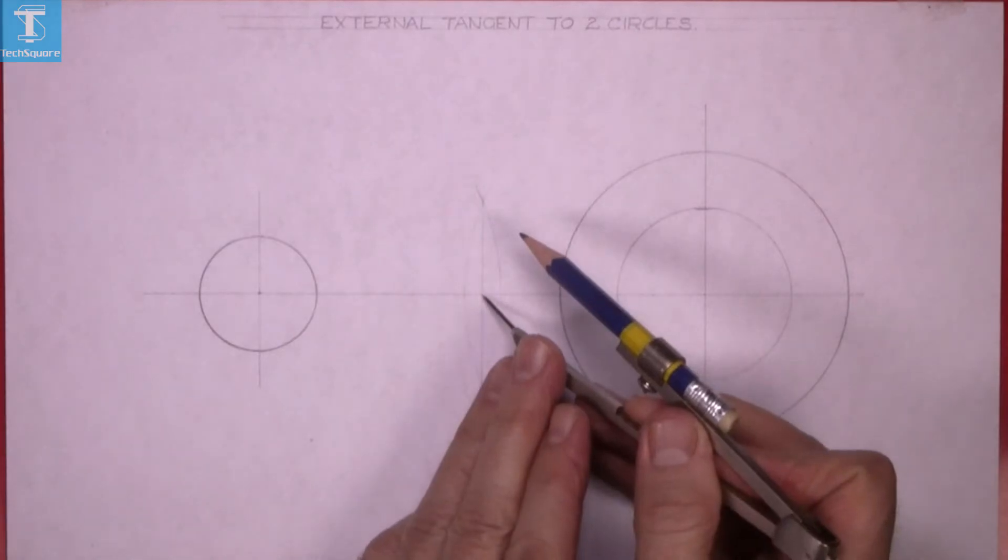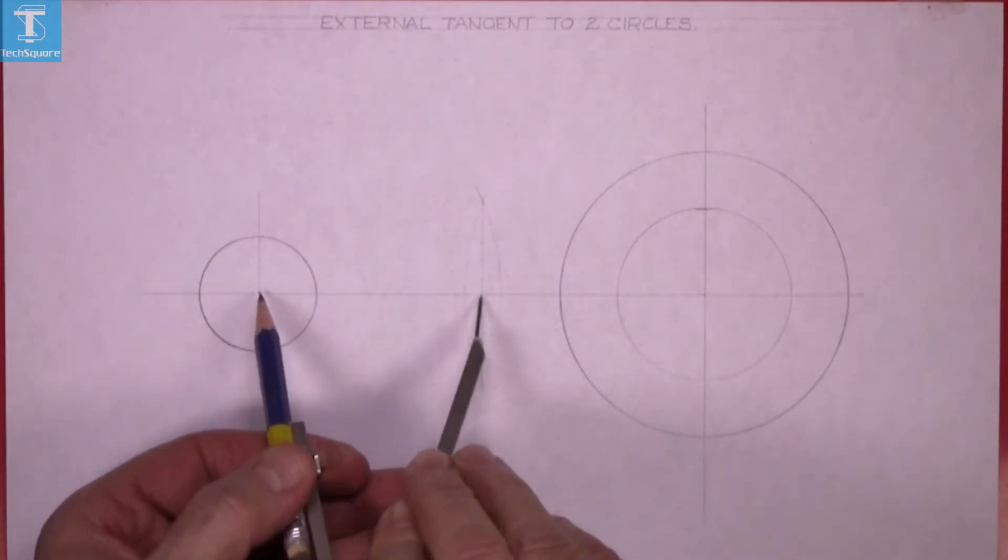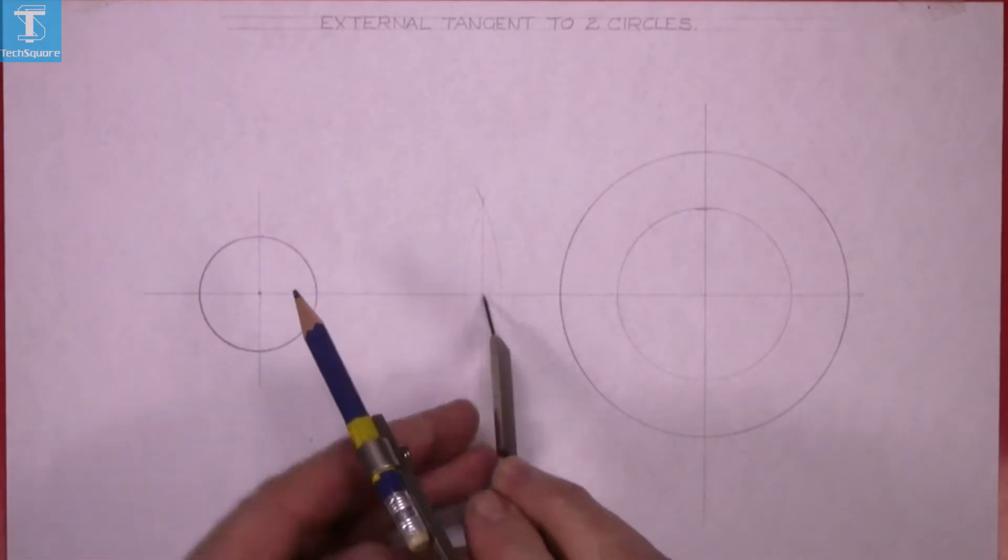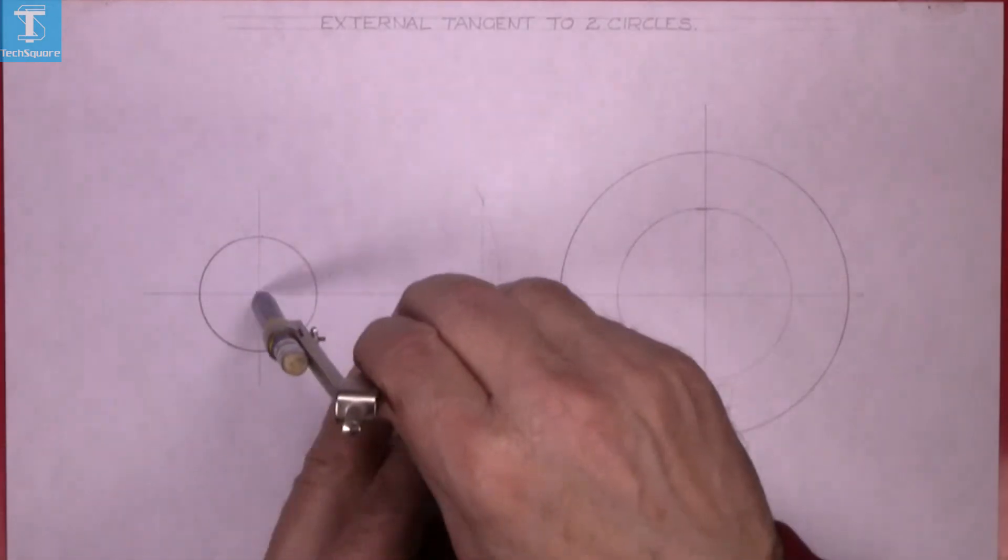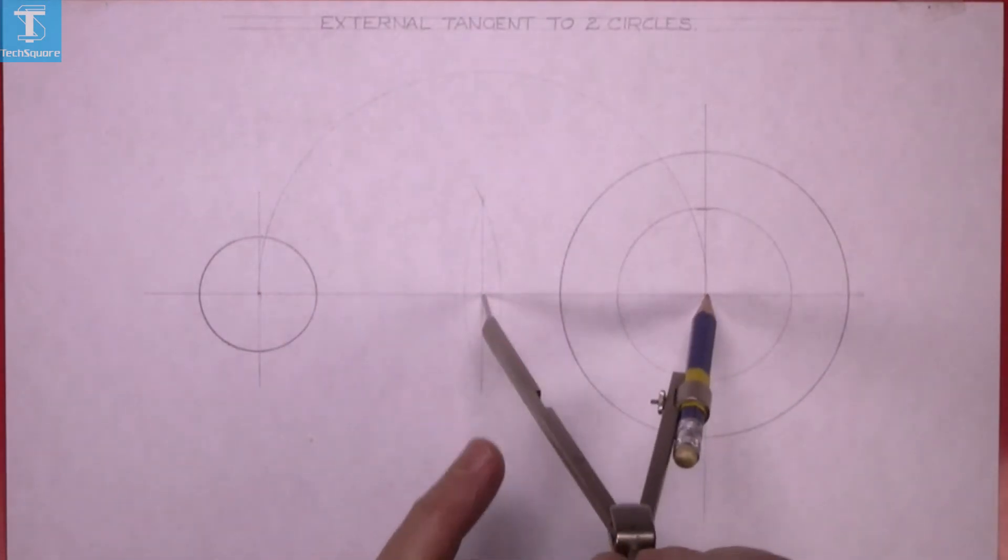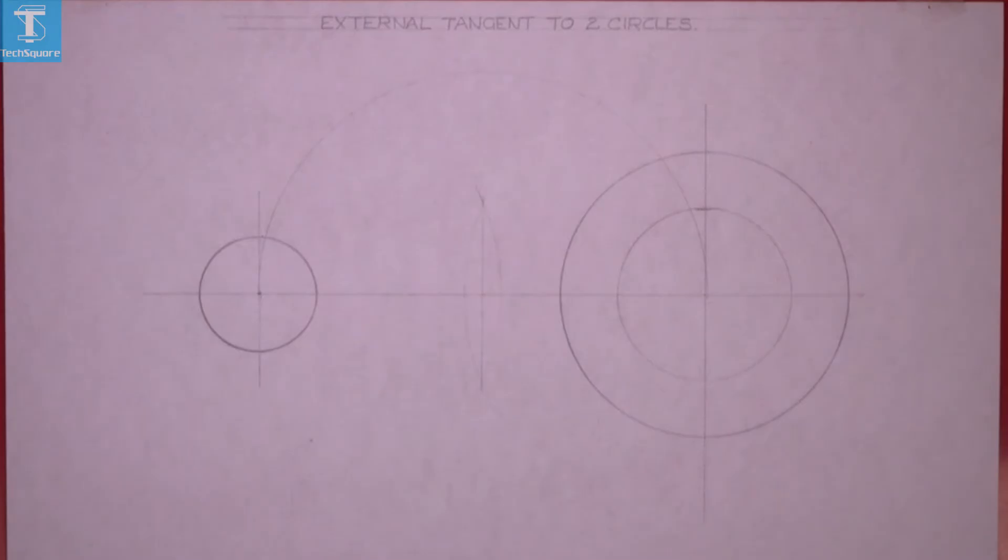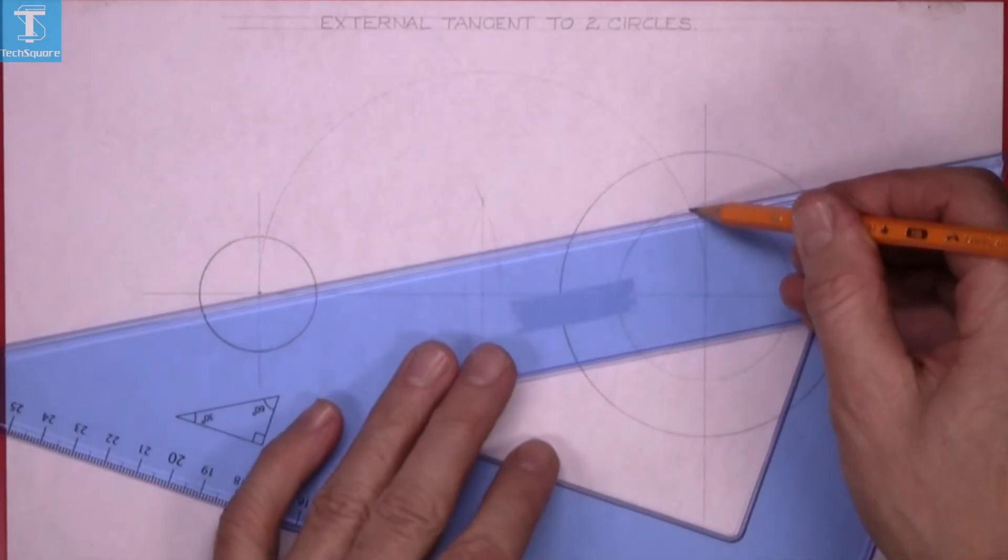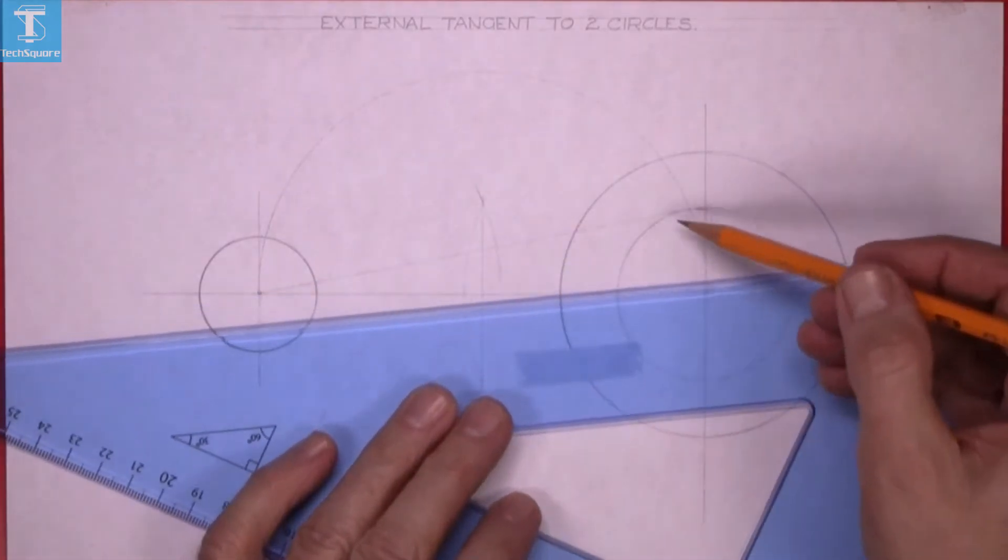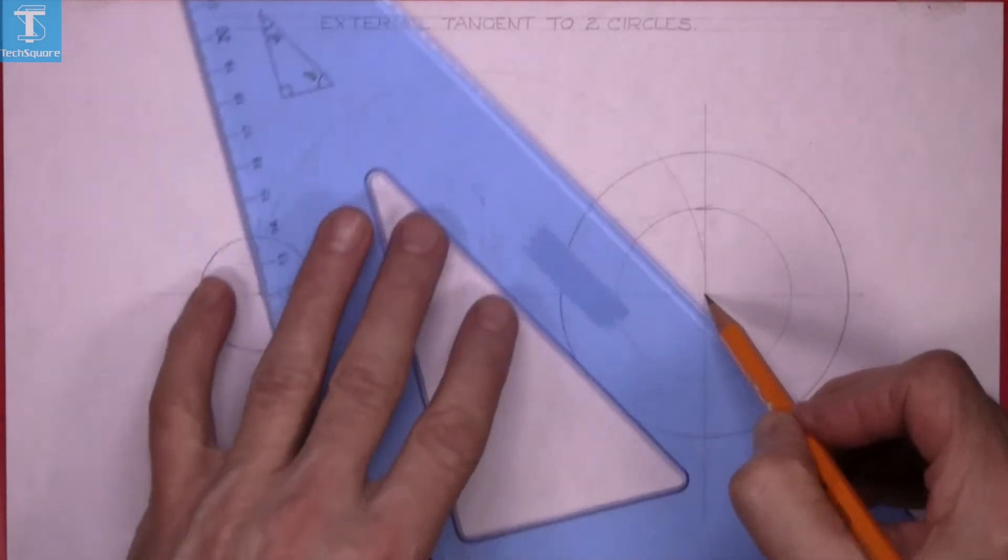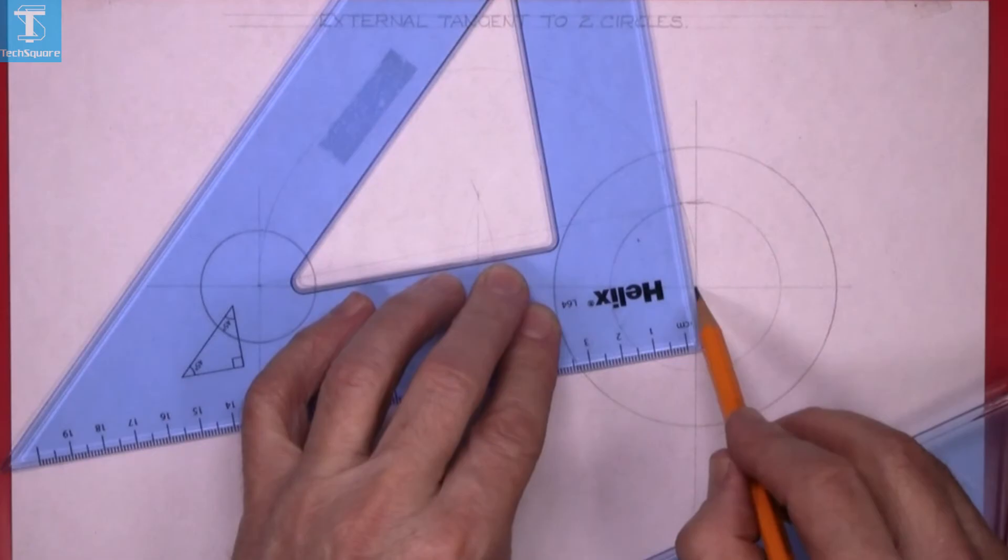The angle in a semicircle is always 90 degrees, so that allows me now to join from that point there to the center of the small circle. That's a tangent to the new circle here. If I join from here to the point of contact, that's a normal, and then extend it on ahead. That gets me the point on the bigger circle.